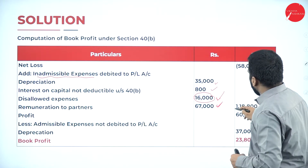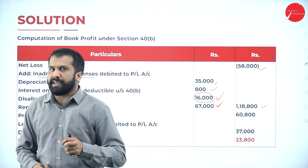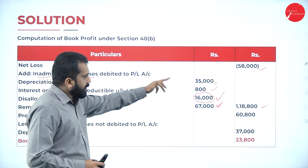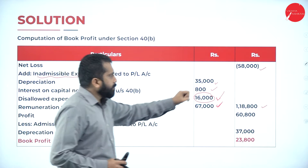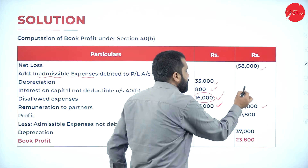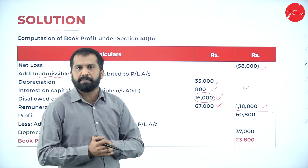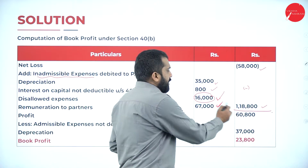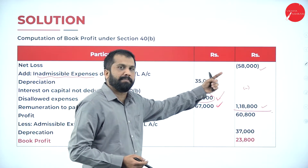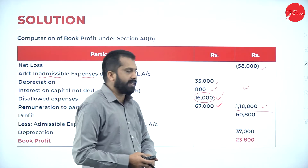Total is 1,18,800. In this case 58,000 is your loss, so it is in a negative value. 1,18,800 minus 58,000 loss — it will become 60,800. Normally we are supposed to add, but here we are going reverse. That's why I have done minus. So 1,18,000 minus your loss 58,000 it will become 60,800.